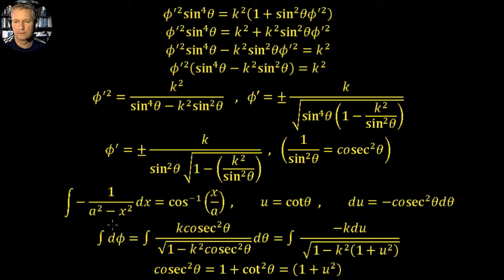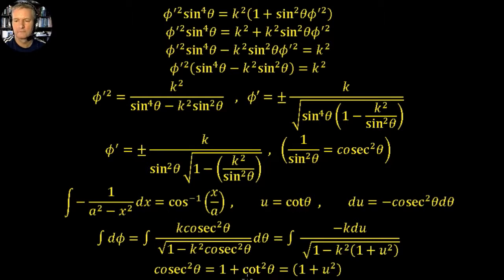We want to get this into a standard form, and we'll use the substitution u = cot θ, so that du = −cosec²θ dθ. With this substitution, we end up with a minus sign because of the cosec²θ, giving minus k du all upon √(1 − k² (1 + u²)). You can see the (1 + u²) because cosec²θ = 1 + cot²θ, which is another identity, and cot²θ is u². So we end up with this term.